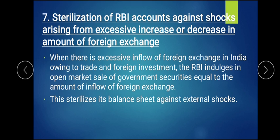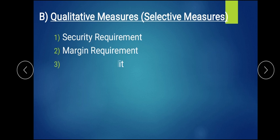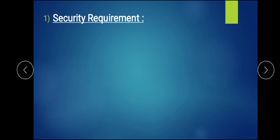These seven quantitative measures impact the whole economy - affecting all sectors and mostly controlling inflation, deflation, depression, or crisis situations. This is how all quantitative measures of monetary policy are controlled by the RBI. Now let's study qualitative measures, also called selective measures. There are four types: security requirement, margin requirement, ceiling of credit, and discriminatory interest rate.